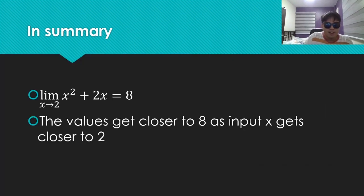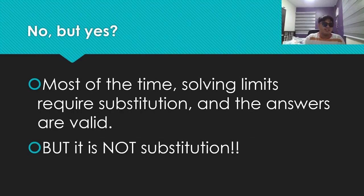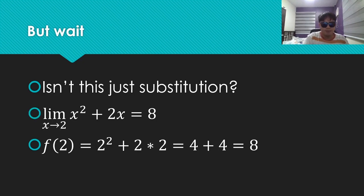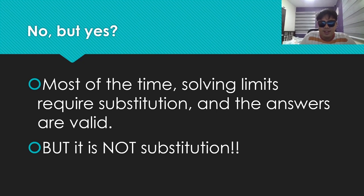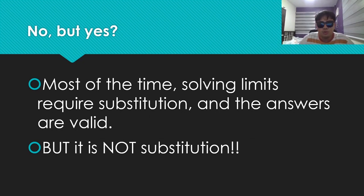In summary, the limit of x squared plus 2x as x goes to 2 is 8, because the values get closer to 8 as input x gets closer to 2. But you might ask — isn't this just substitution? The limit as x goes to 2 gives 8, and we can also say f of 2 equals 8. Well, no — but yes. Most of the time, solving limits requires substitution and the answers are valid. But it is not substitution. We're not finding the value as x equals 2; we're finding where the function goes as x goes to 2. Substituting is just a shortcut.